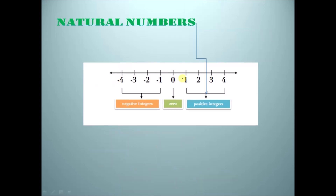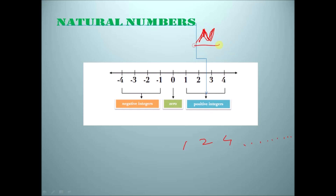Natural numbers are all the numbers that we learned from LKG — like 1, 2, 3, 4, and so on. These are the positive integers, and these are represented by N, capital N.